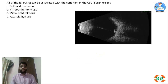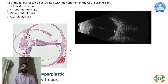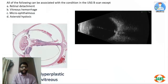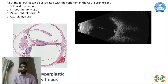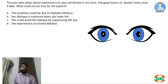The next question shows a USG B-scan where something is joining the retina, the optic disc, and the lens — this is persistent hyperplastic primary vitreous (PHPV), a remnant of the hyaloid vessel. It can be associated with retinal detachment, microphthalmos, and vitreous hemorrhage since it has blood vessels. However, it is NOT associated with asteroid hyalosis — that is the answer.